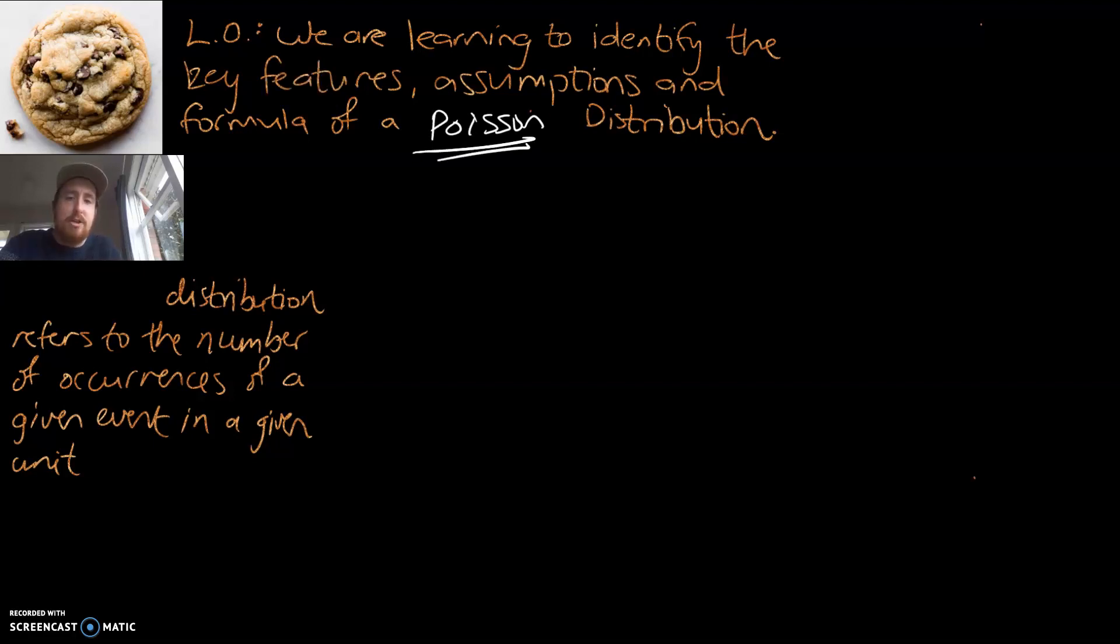This is a brand new type of distribution that we're looking at and it will be the first time. So the idea of a Poisson distribution refers to the number of occurrences of a given event in a given unit. I'm just going to underline given event and given unit because those are really key parts or key concepts to understand what a Poisson distribution does.